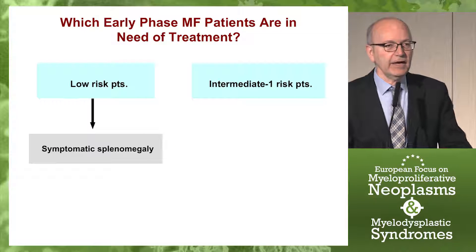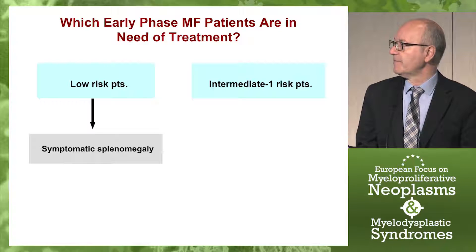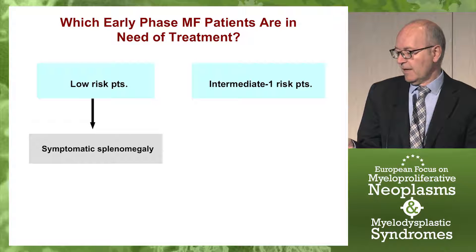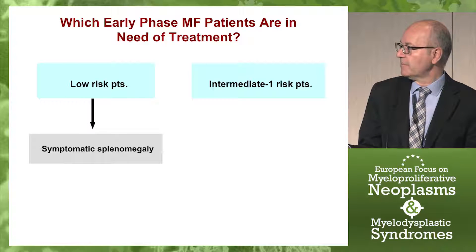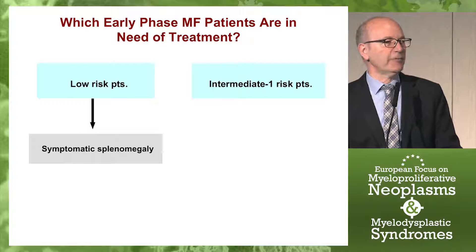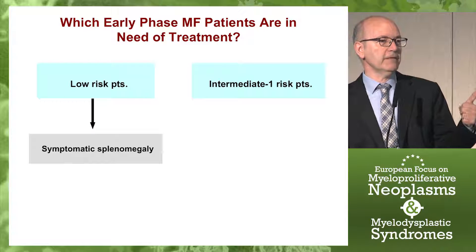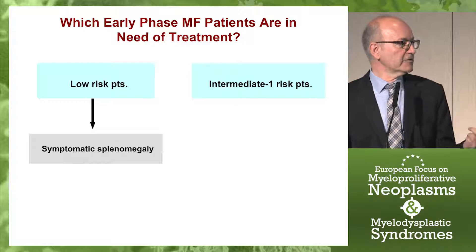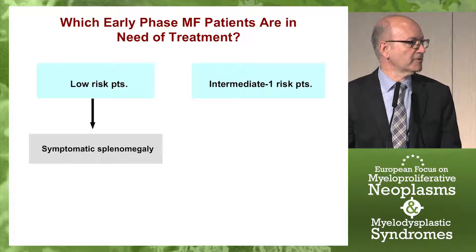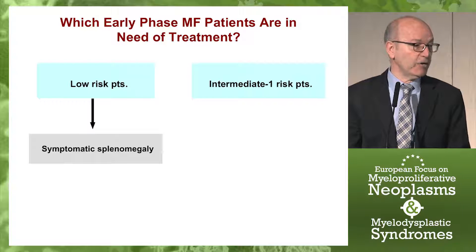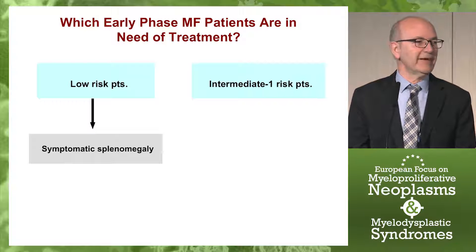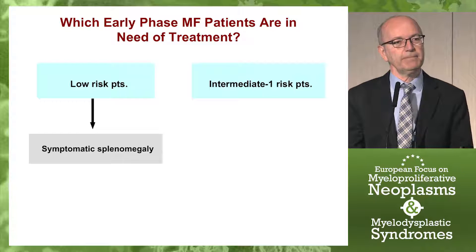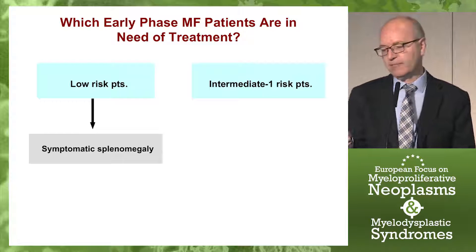But which early-phase myelofibrosis patients are in need of treatment? In patients with low-risk myelofibrosis, only patients with symptomatic splenomegaly. By definition, they don't have anemia, they don't have constitutional symptoms, they don't have severe leukocytosis — none of the poor prognostic features. But a minority of them can have symptomatic splenomegaly, and some patients may need treatment just because of that.